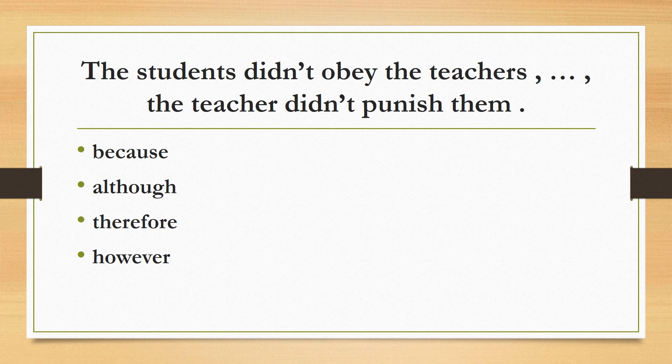The students didn't obey the teachers, the teacher didn't punish them, because, although, therefore, however. The correct answer is 'however', because when the result of the first sentence is opposite to the second sentence, we use 'however'.